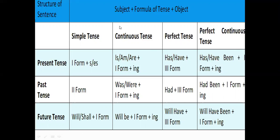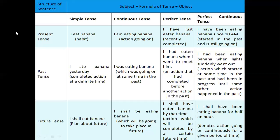Now we will consider two simple examples to understand this. In present tense: 'I eat banana' — that is simple present tense. Simple present tense is used to denote a habitual action or a universal truth. So here I have taken the simple example of eating banana: 'I eat banana.'